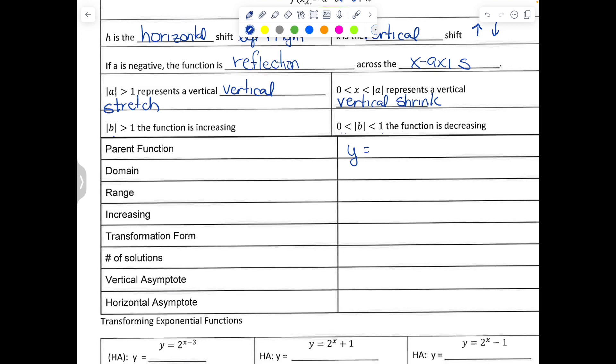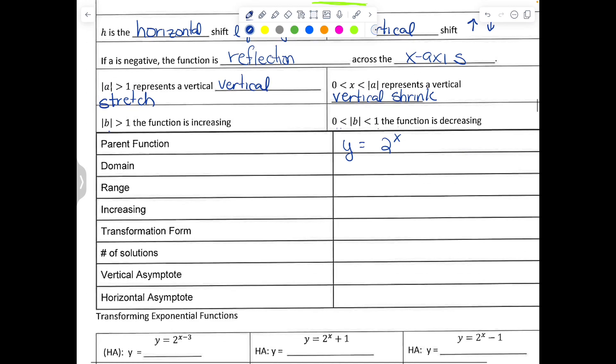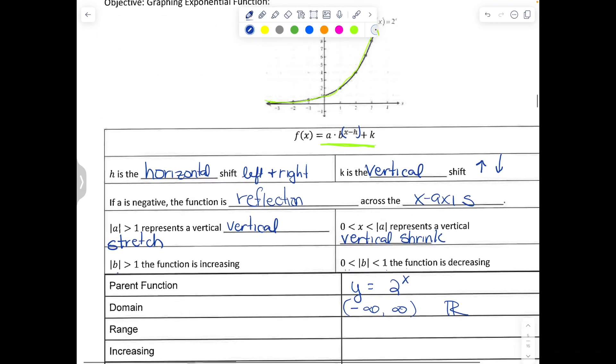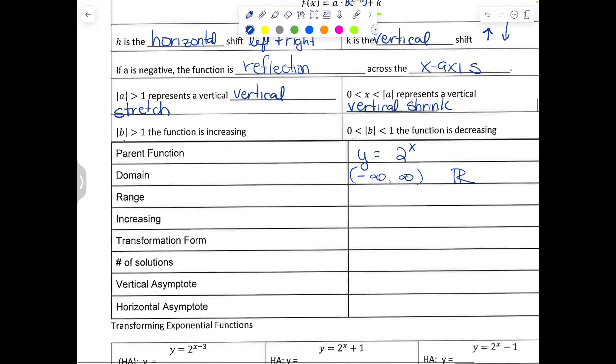The parent function looks like this: y equals 2 to the x. The domain, if you notice in this graph above, there's no place where there's a gap or where it doesn't work. So the domain is going to be from negative infinity to infinity, or you could say all real numbers. The range—notice how this graph never goes below 0—so my range, my y values, are going to be y is greater than 0. And it's increasing on its domain. That means that from negative infinity to infinity, the graph is increasing.